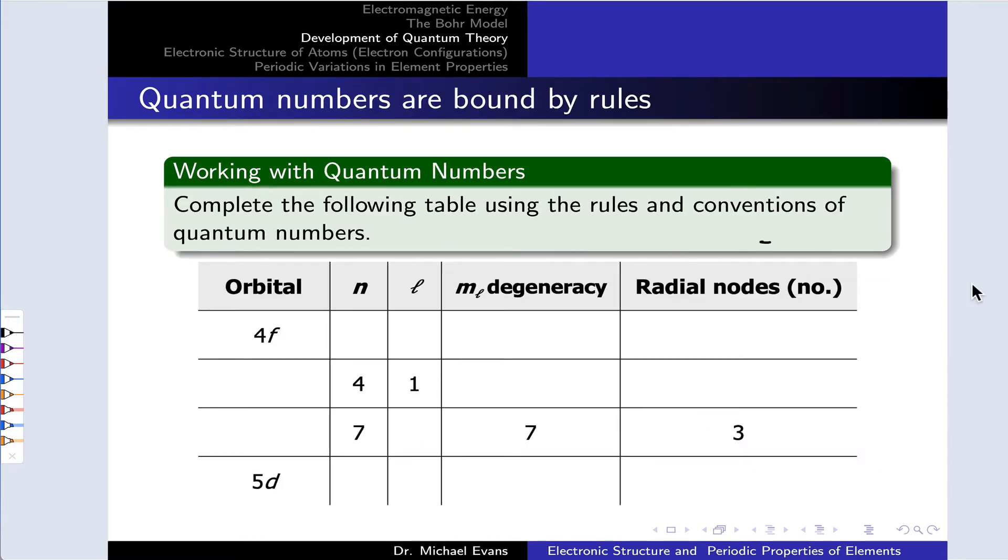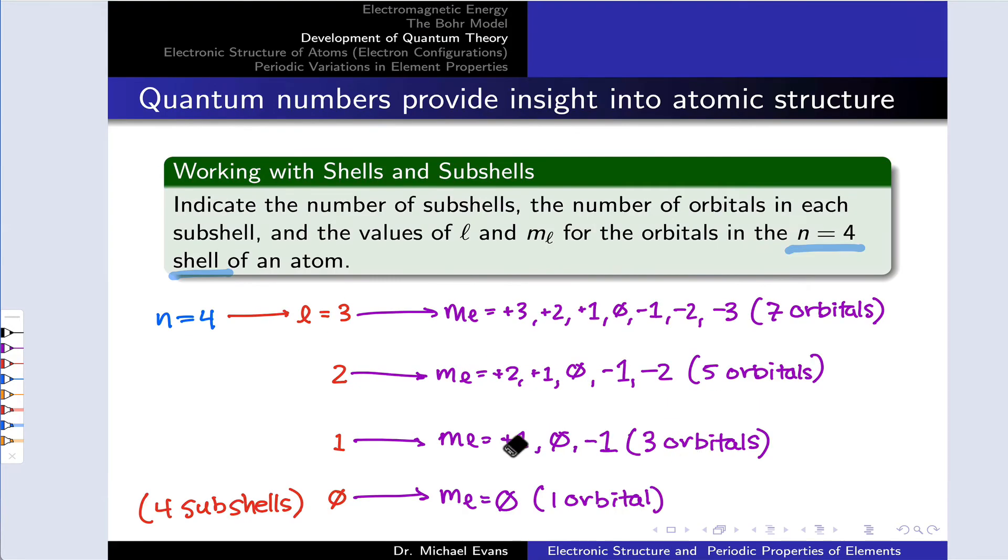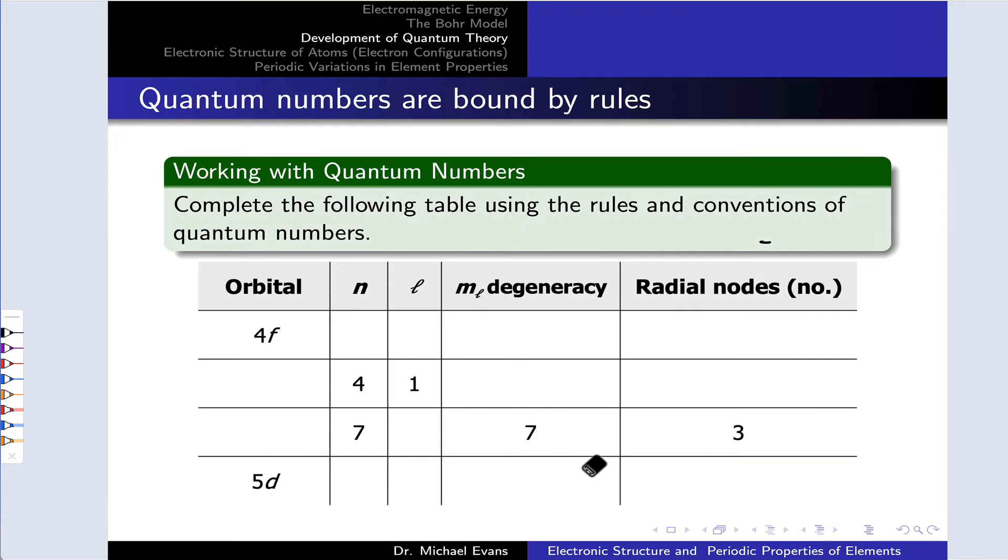In this practice problem, we're working with quantum numbers to deduce either the value of n and L from the orbital name, as well as the m sub L degeneracy and the number of radial nodes based on the information that's there. Basically deduce the missing information from information provided. And m sub L degeneracy here just refers to the number of orbitals within that subshell, which we saw on the last slide corresponded to the number of possible values of m sub L or its degeneracy.